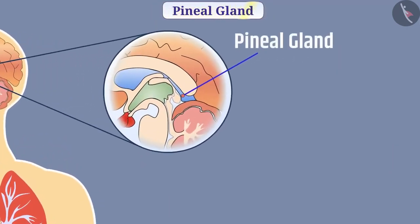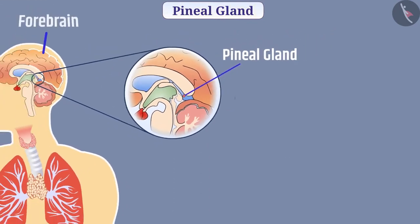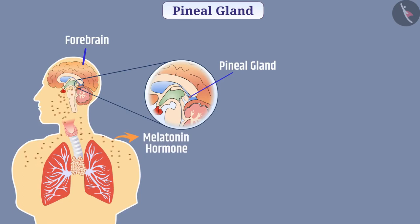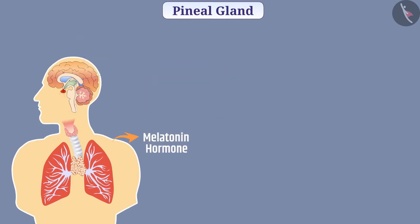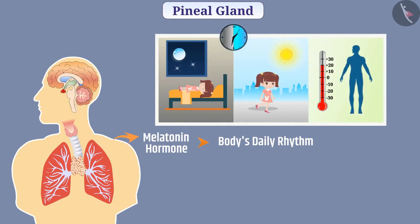The pineal gland is present in the upper part of the forebrain and secretes melatonin hormone. Melatonin regulates the body's daily 24-hour rhythm, controlling the sleep-wake cycle and body temperature.